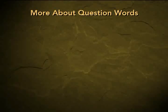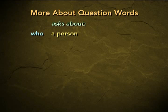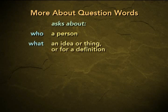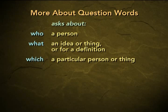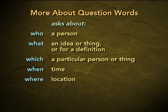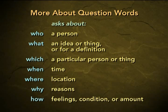Now look at these question words again. 'Who' asks about a person. 'What' asks about an idea or thing, or asks for a definition. 'Which' asks about a particular person or thing. 'When' asks about time. 'Where' asks about location. 'Why' asks for reasons. And 'how' asks about feelings, condition, and amount.